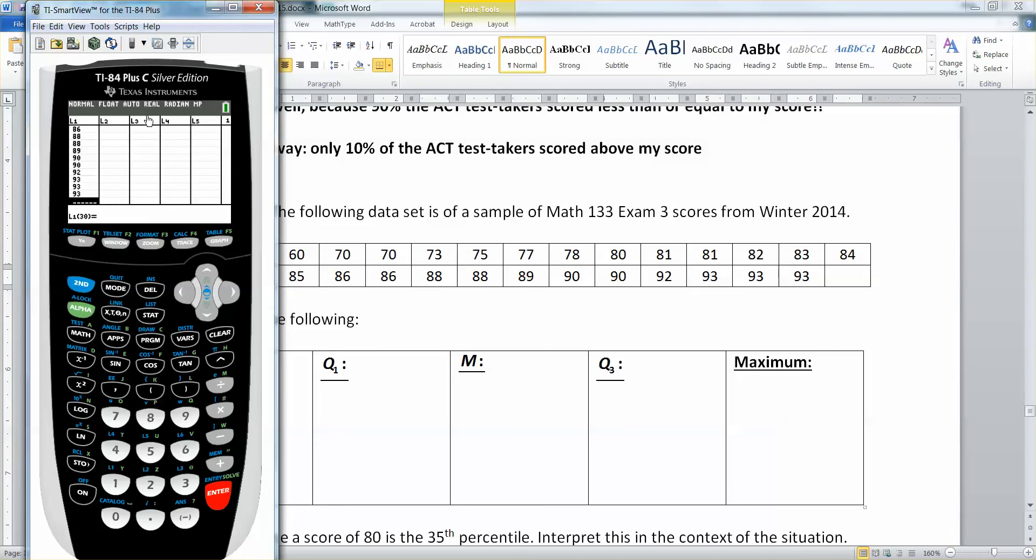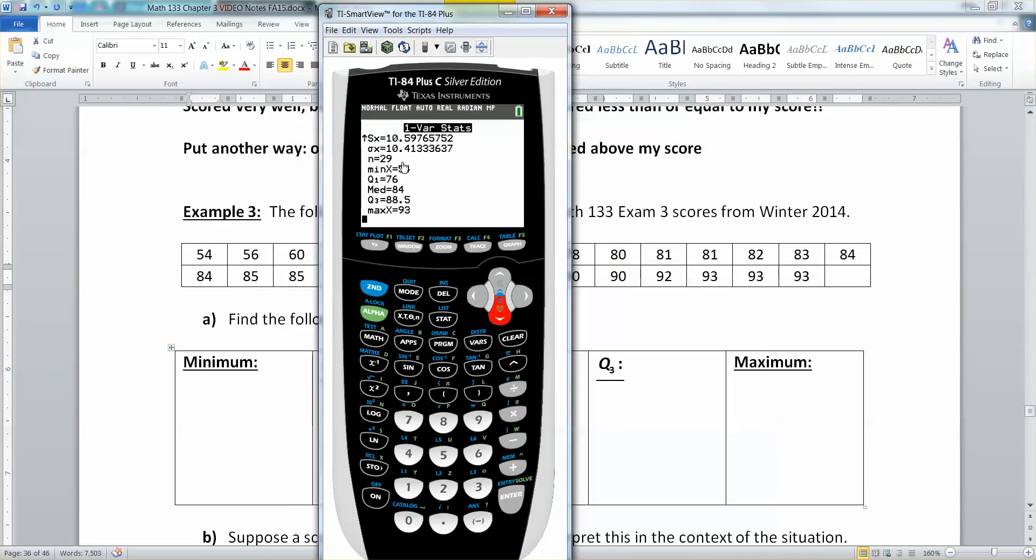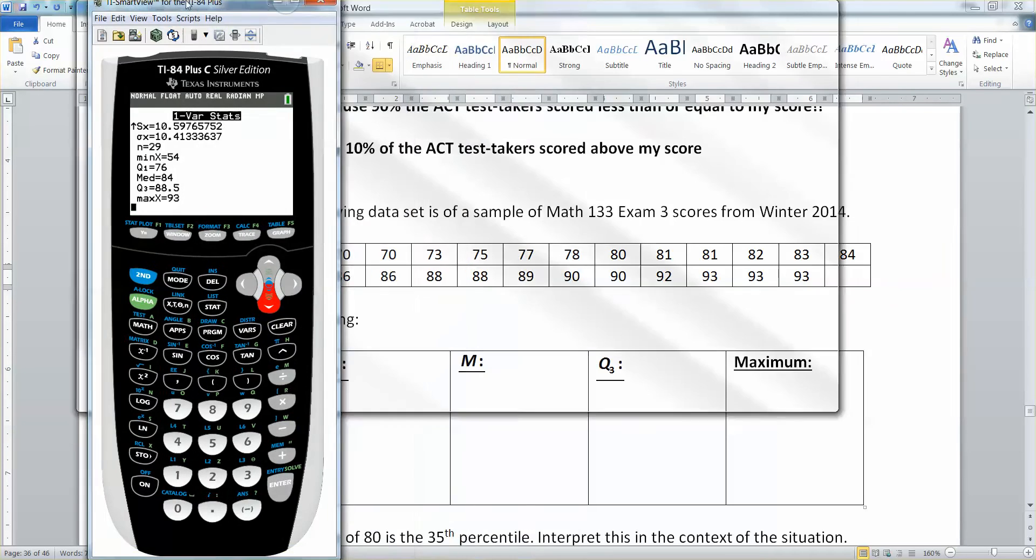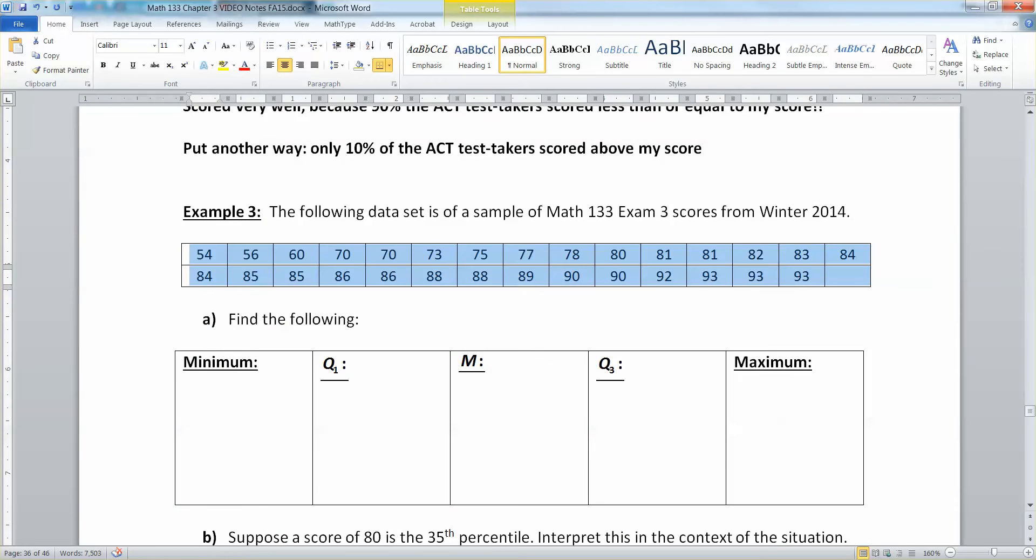There, they're all typed in now. So I'm going to run one variable stat. Stat calculate one variable stat. I want to tell it list one. So second one, that's where my data are. I'm going to go down to calculate and run it. And there's my mean, which I might need later, 80.896. I'm going to go grab the min, which is 54. There it is, that lowest number. The Q1 is 76. The median is 84. Q3 is 88.5 and the max was 93. So I'm going to type those numbers down here. So this one was the min, 54. And then Q1. And I kind of want to show you where Q1 is. So Q1 is 76.